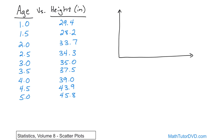You wouldn't say that a child is 29.4 inches tall, therefore that is the reason he's a one-year-old. If there's any kind of relationship going on here, probably the independent variable is age. We want to figure out which of the two is the independent variable — in this case, it's going to be age. So we'll put height on the y-axis, measured in inches.